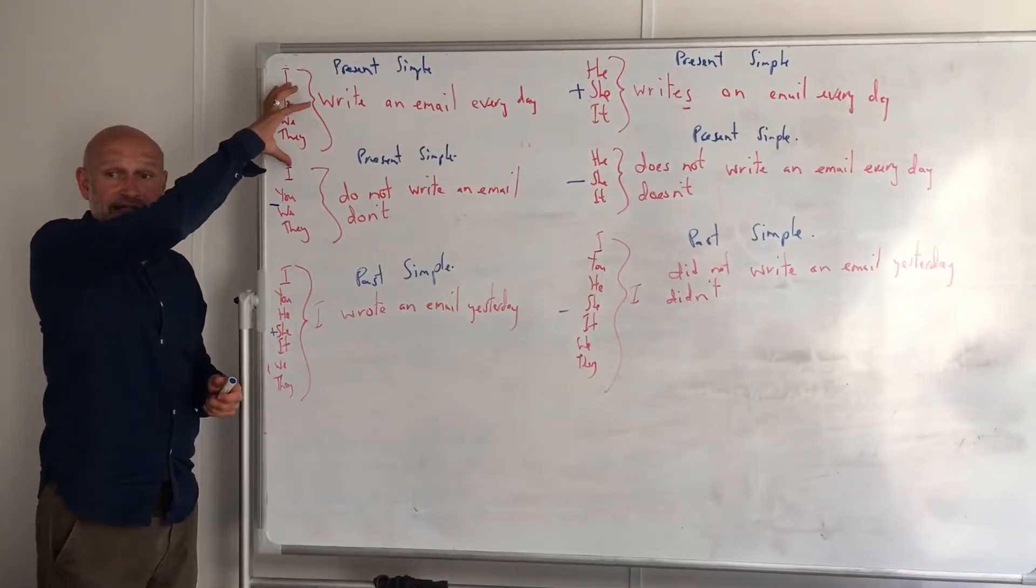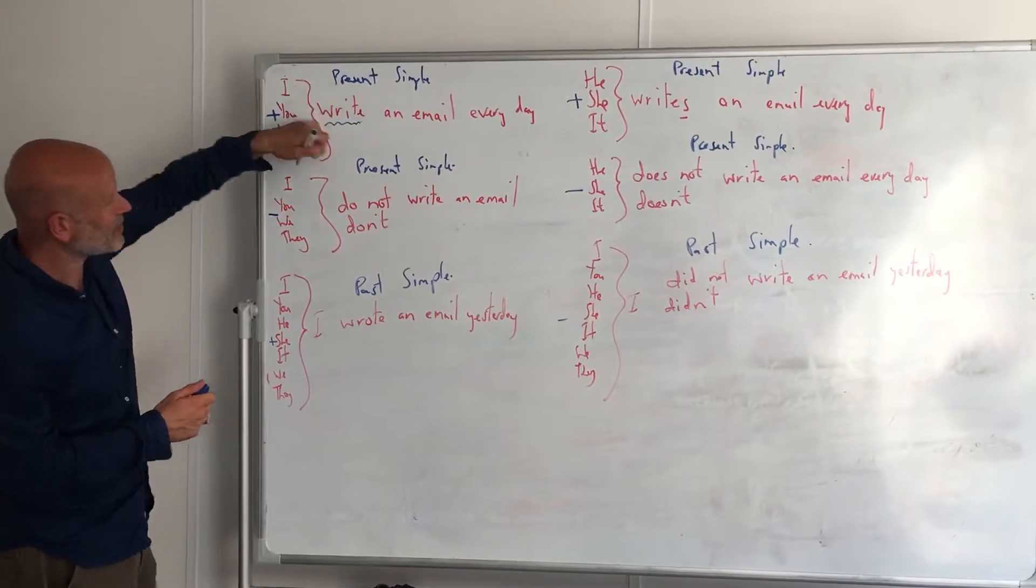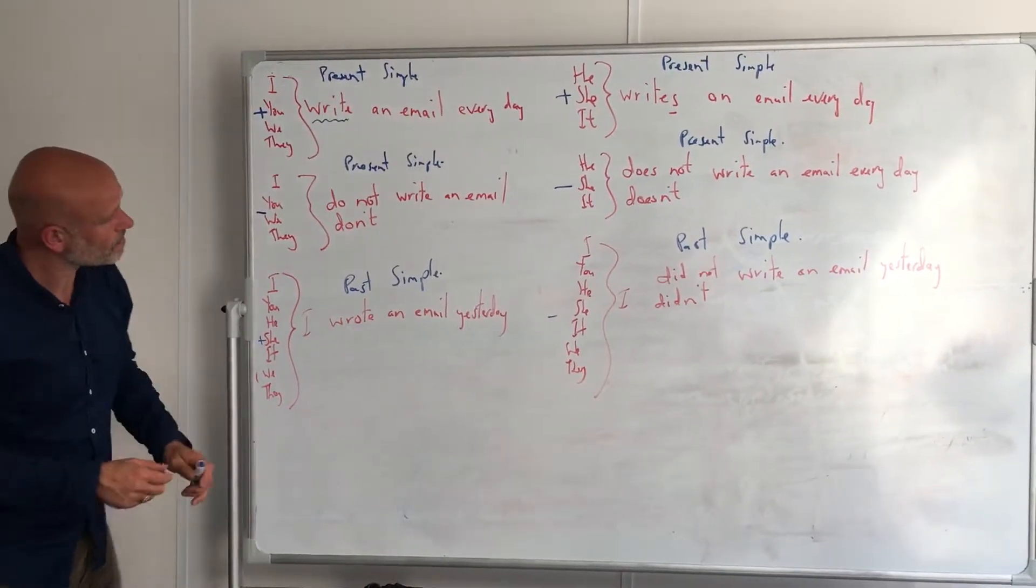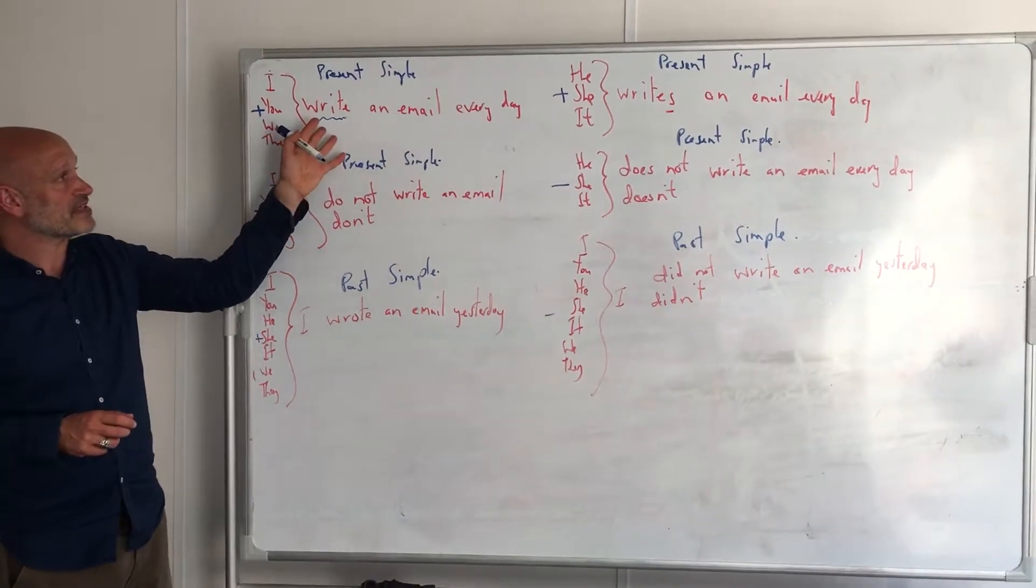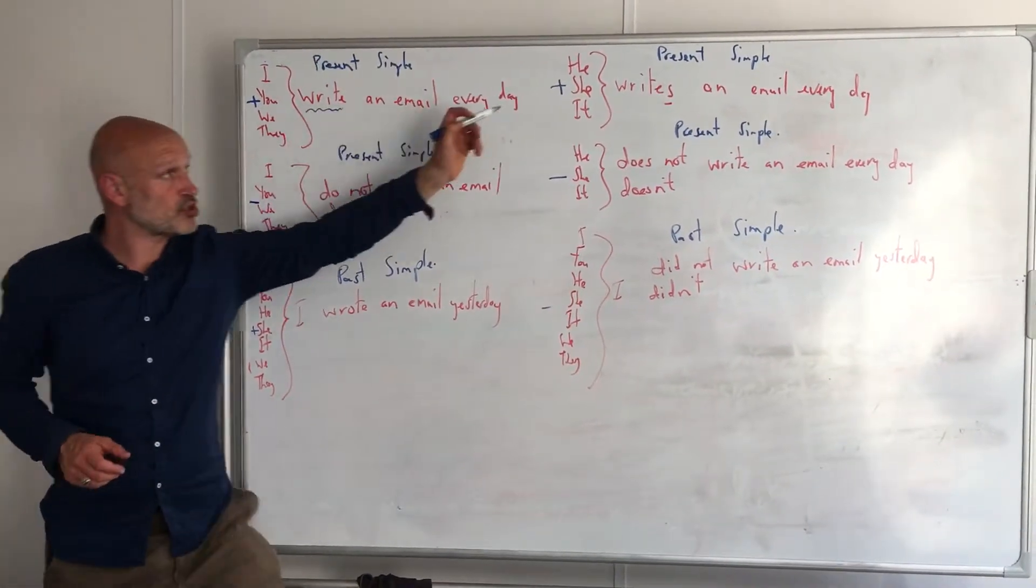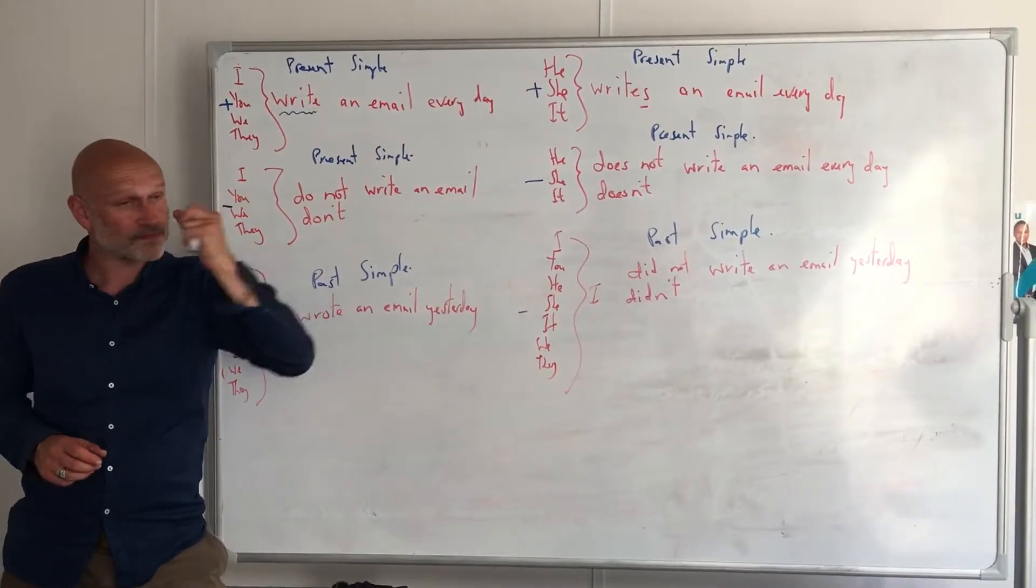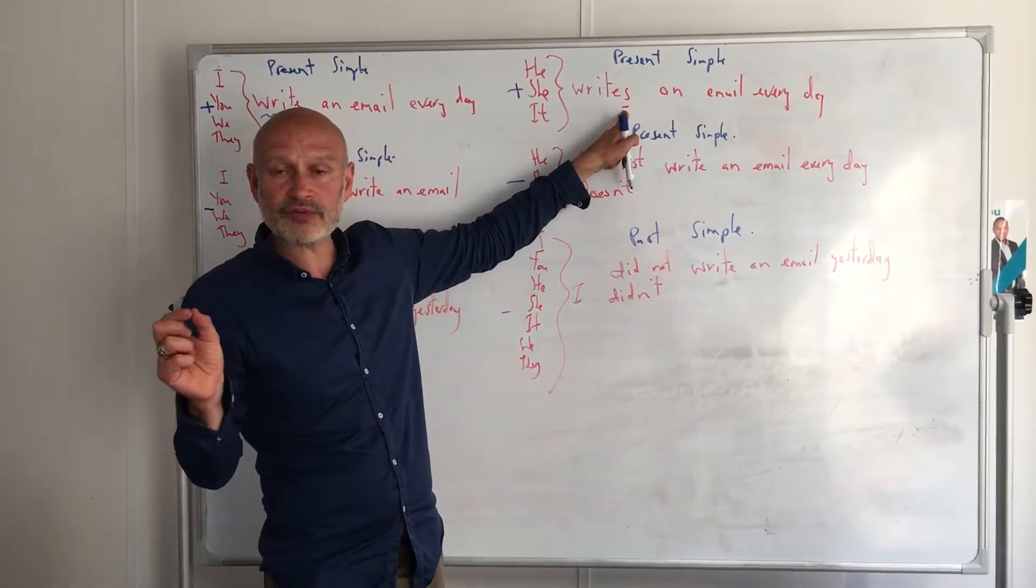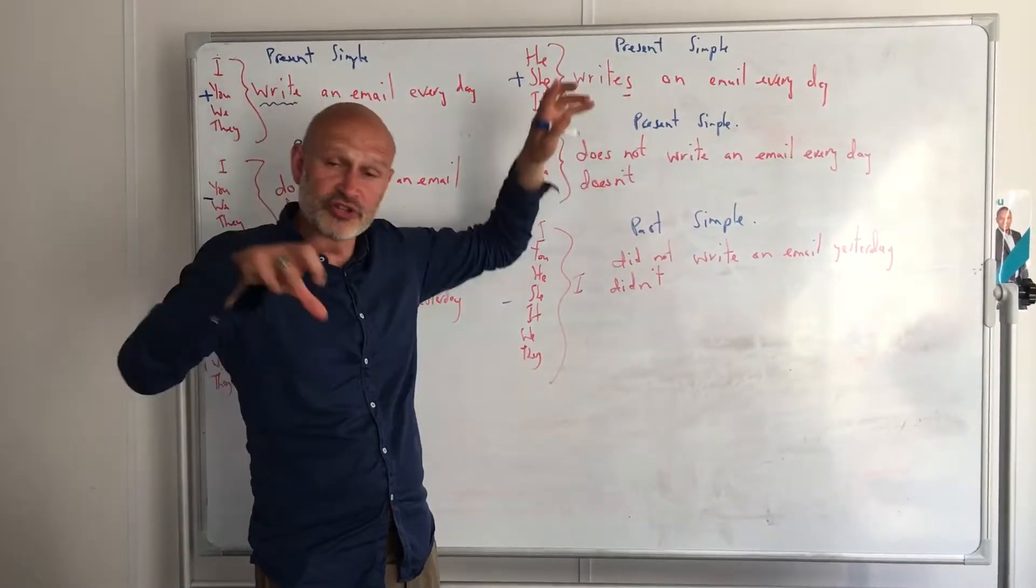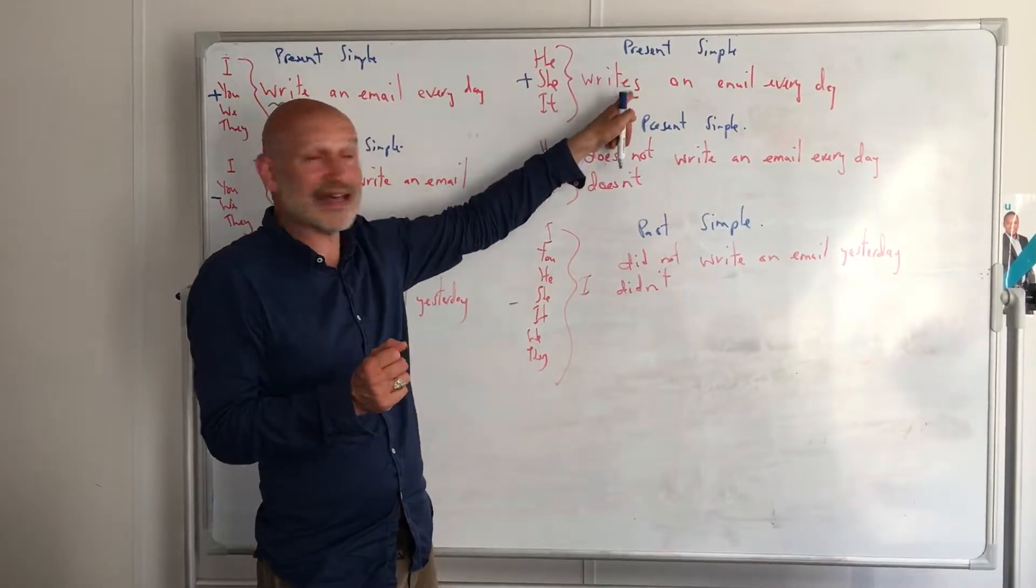So after the subject comes a verb. Here's the verb and then the rest of the sentence. Now when we write this in the third person using he, she, it, we need to make a change, but it's just a very small change. We just have to add this sound to the end.